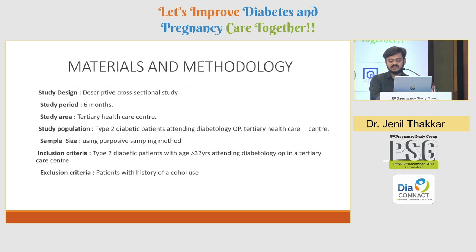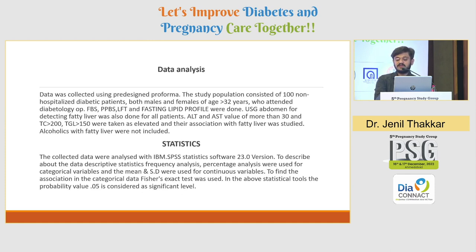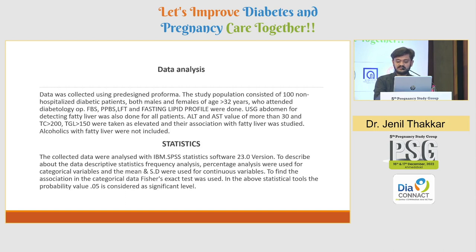Inclusion criteria were type 2 diabetic patients aged more than 32 years. Patients with a history of alcohol use were excluded. Data was collected using a pre-designed proforma. For ALT and AST, values of more than 30 were taken as positive. Total cholesterol more than 200 and triglycerides more than 150 were considered elevated. Fatty liver was diagnosed using abdominal ultrasound. Statistical analysis was performed using SPSS version 23.0, with a p-value of less than 0.05 as the significance level.